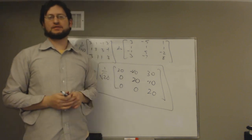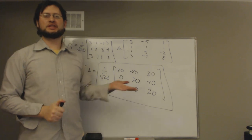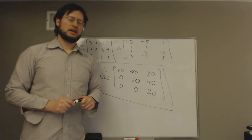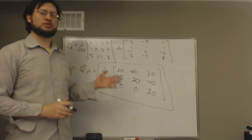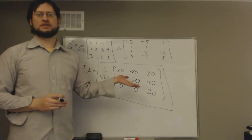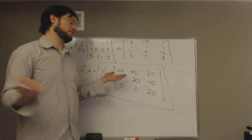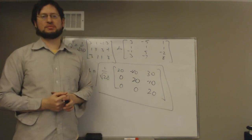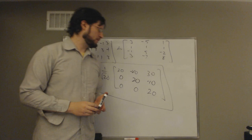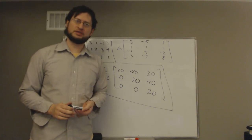This QR factorization has lots of applications in practice — it's used in tons of matrix computation programs. We've used the Gram-Schmidt process to find the QR factorization. That wraps up section 6.4, and next time we'll start Chapter 7.